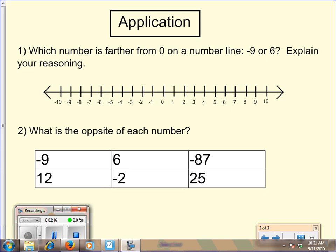Now we would like you to try some on your own. Why don't you press pause on this video and answer both questions. Question one asks you which number is farther from zero on a number line: negative nine or six? And the second question asks you to write the opposite of each number given. Why don't you press pause on the video and when you have figured it out for yourself, press play to see the answers.